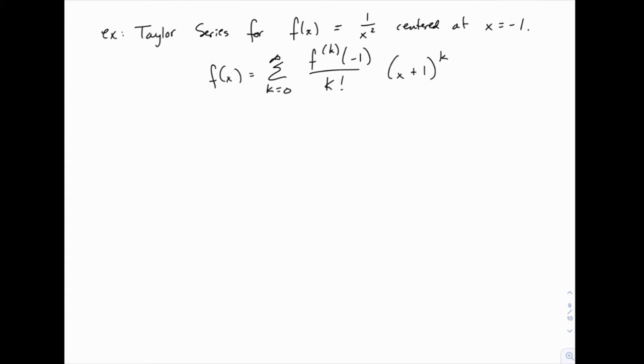So here's the formula for the Taylor series where I've filled in a = -1. Notice we have x minus negative 1 to the k, which reduces to (x+1)^k.